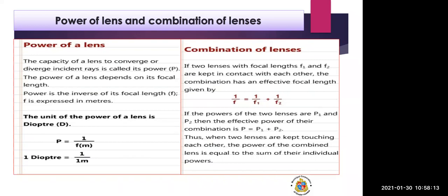Now comes the combination of lenses. If two lenses are combined, there will be two focal lengths. If two lenses with focal lengths F1 and F2 are kept in contact with each other, the combination has an effective focal length given by: 1/F equals 1/F1 plus 1/F2.